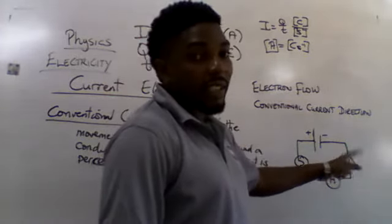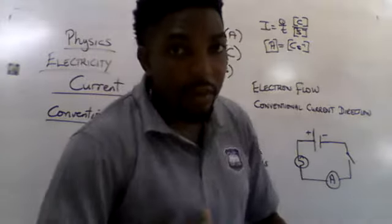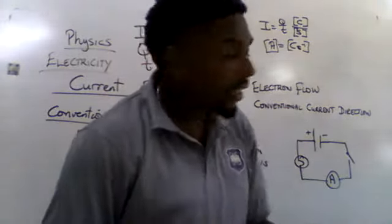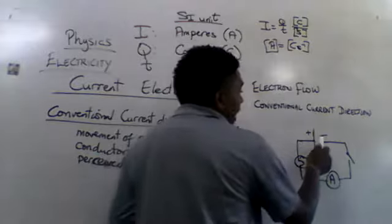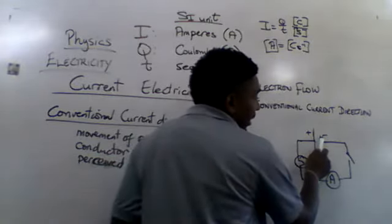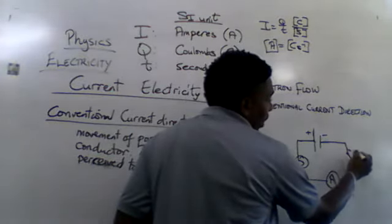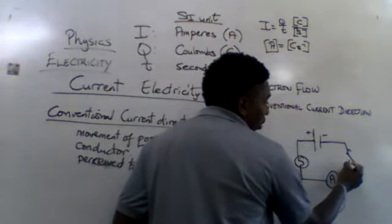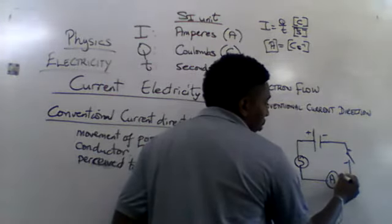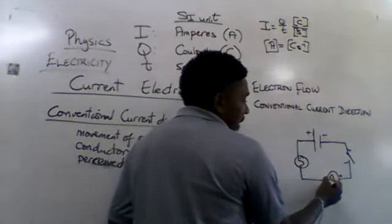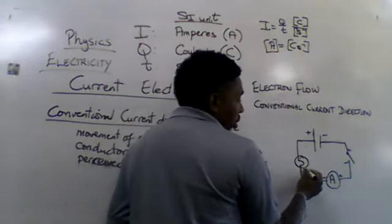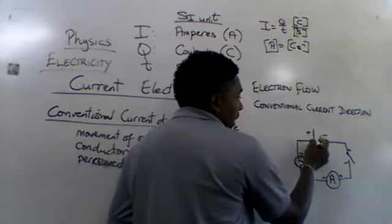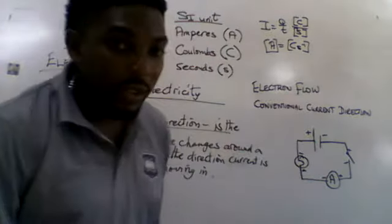In a simple circuit, everything is connected positive to negative — meaning from positive to negative, positive to negative. So if one side is negative, the next side of the switch is positive, then negative, and for the ammeter it goes from negative to positive, then the other side is negative, and negative goes to positive, then back to the positive side of the battery.